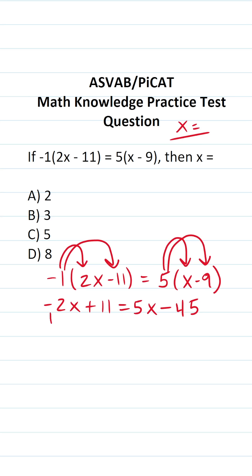So I'm going to move my 2x over here via addition. And at the same time, I'm going to take this 45 and move it to the other side of the equation via addition as well.